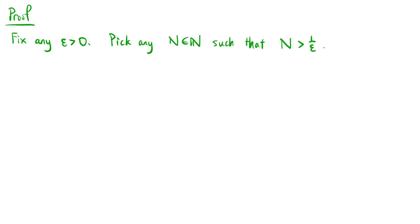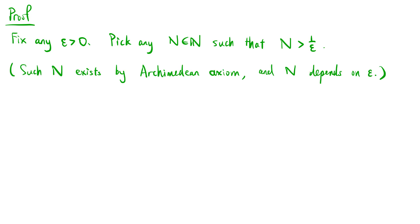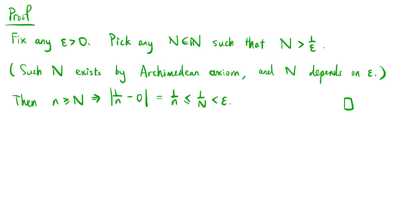Now we can write a formal proof. We fix any epsilon greater than 0 and pick any natural number N such that N is greater than 1 over epsilon. We know that such N exists by the Archimedean axiom, and N depends on epsilon. Then little n greater than or equal to N implies that the absolute value of 1 over n minus 0, which equals 1 over n, is less than or equal to 1 over N, which is less than epsilon. This completes the proof.